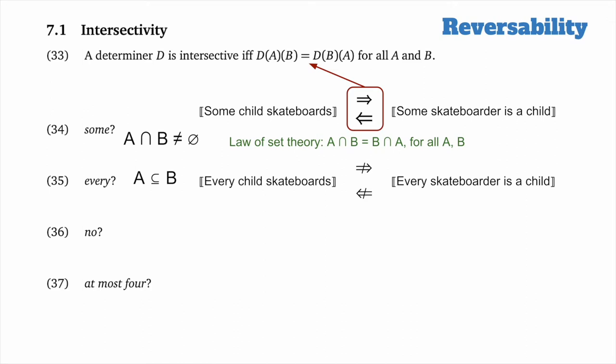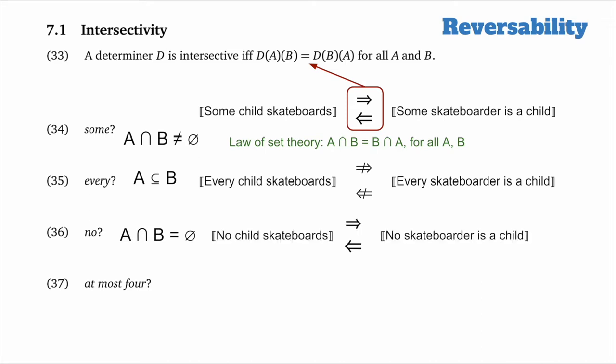I hope you can see how things would go for no and at most four. For no, the relation is still just based in intersections, so it'll be reversible — and 'no child is a skateboarder' does seem truth-conditionally identical to 'no skateboarder is a child.' For at most four, the core relation depends only on the cardinality of the intersection, so that'll obviously be reversible too. Some determiners have intersectivity and some don't, and we can understand why if we look through the lens of our theory. On the processing side, we might expect intersective determiners to be simpler and perhaps easier for people to process and verify.